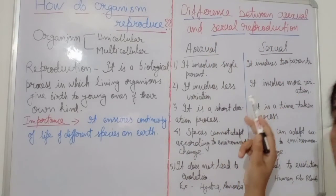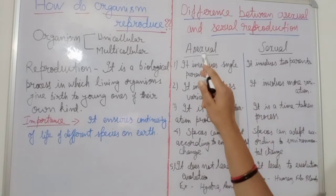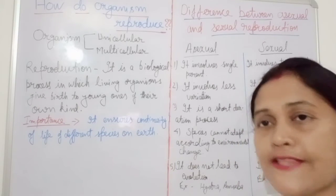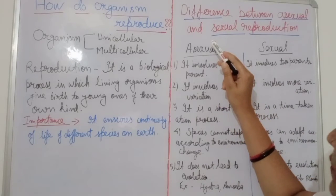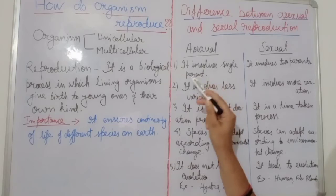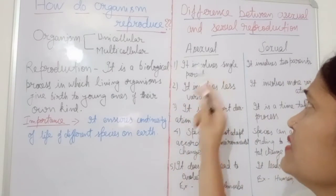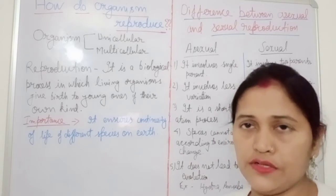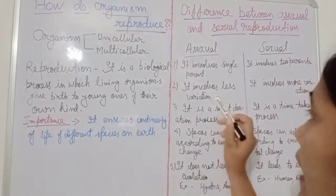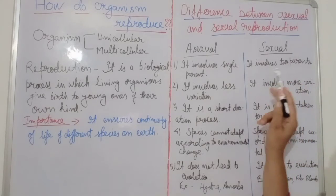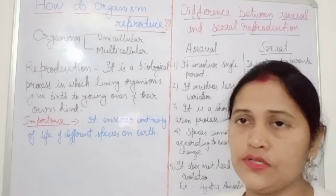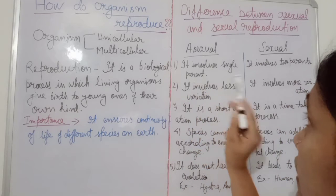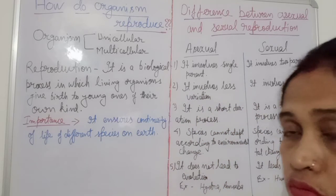There are basically two ways of reproduction: asexual and sexual. First, asexual reproduction involves a single parent — uniparental. In sexual reproduction, it involves two parents, that is male and female. Second difference: asexual reproduction involves very less variation, while sexual reproduction shows more variation because offspring are not exactly similar to their parents.